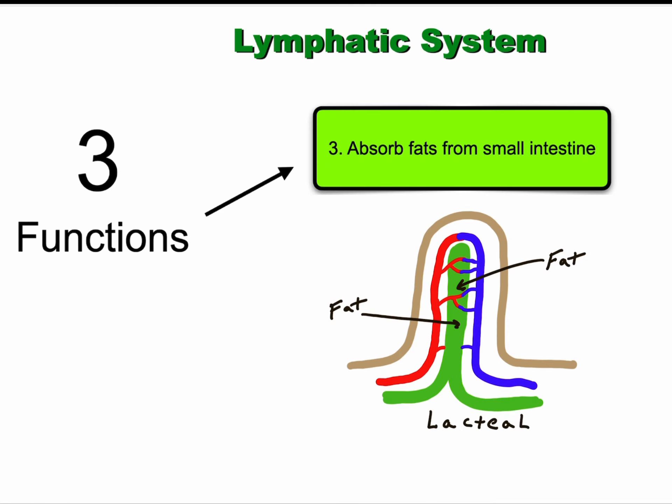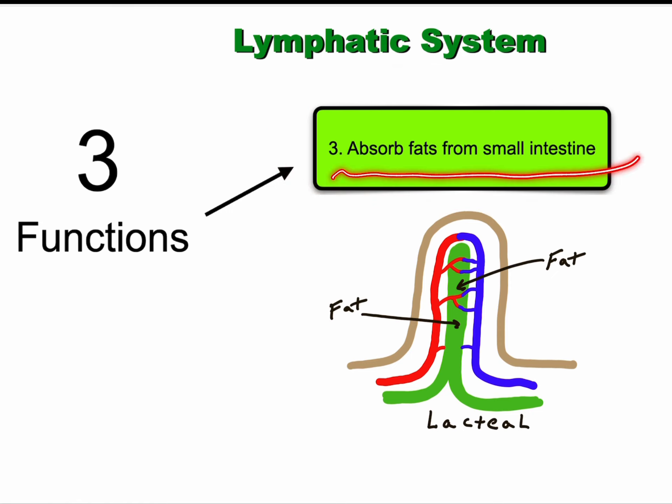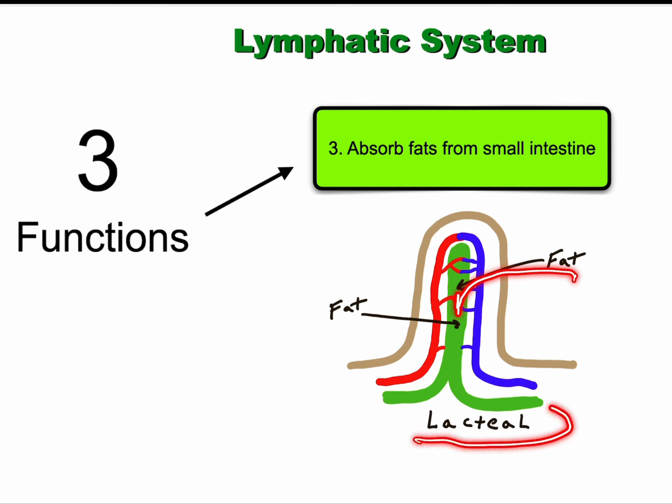The third function of the lymphatic system is to absorb fats from the small intestine. Fat droplets in the GI tract are covered with molecules that allow them to be suspended within the chyme — the material within the small intestine. This makes it difficult or impossible for them to be absorbed by the same routes used for proteins and amino acids. So there is a special system where fats are absorbed by modified structures called lacteals, which are part of the lymphatic system.